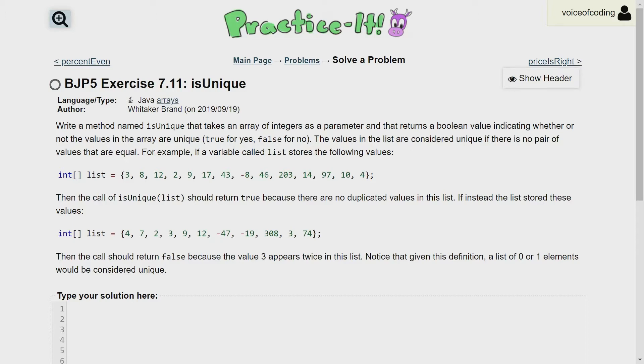If instead the list stored these values: 4, 7, 2, 3, 9, 12, -47, -19, 308, 3, 74, then the call should return false because the value 3 appears twice in this list.